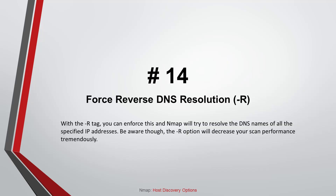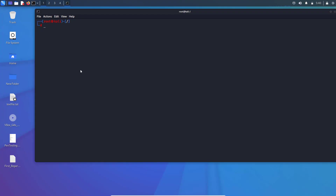Command number fourteen: Force Reverse DNS Resolution, using the dash capital R flag. You can enforce this and Nmap will try to resolve the DNS names of all the specified IP addresses. Be aware though, the capital R option will decrease your scan performance tremendously.